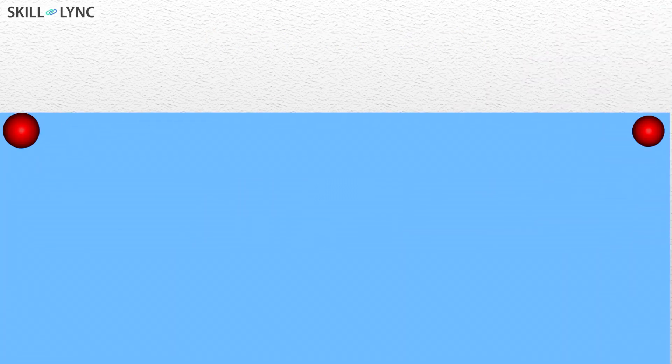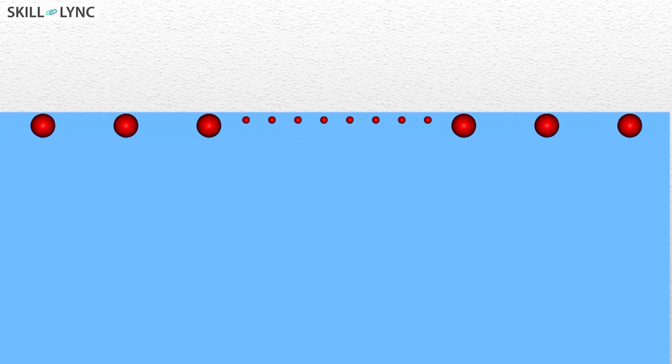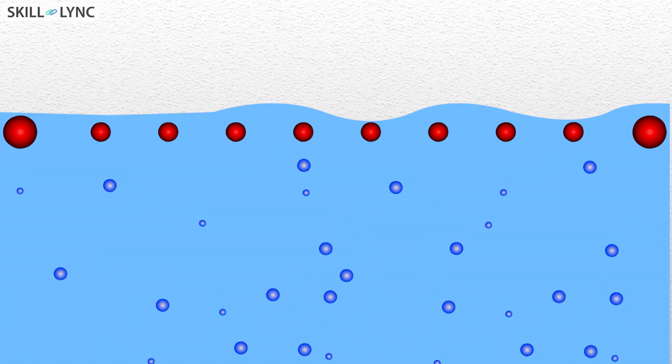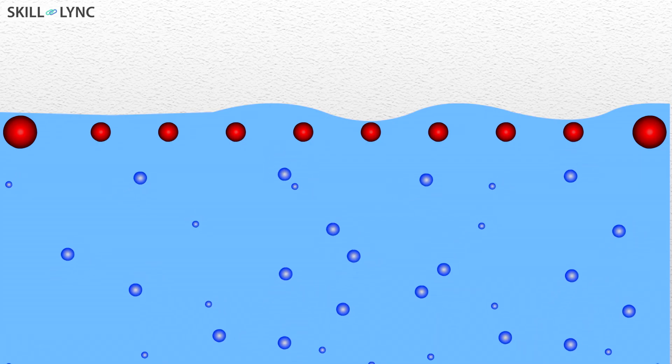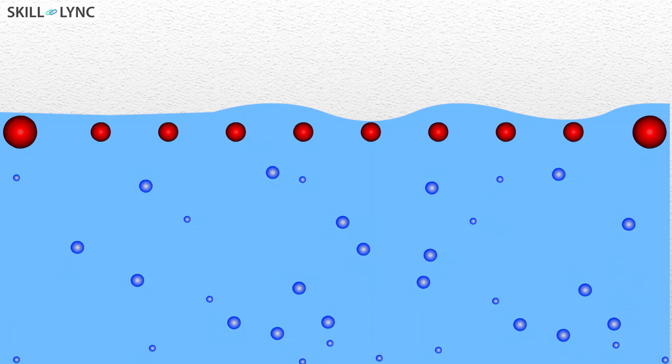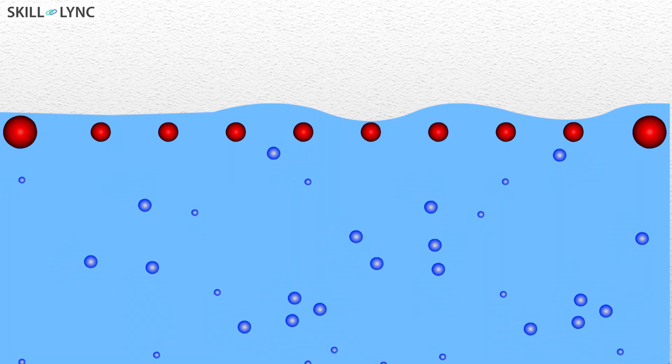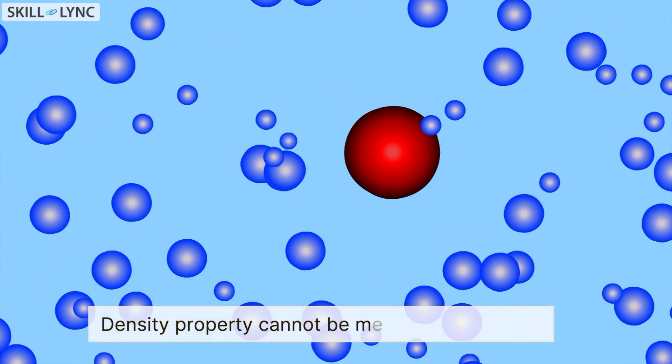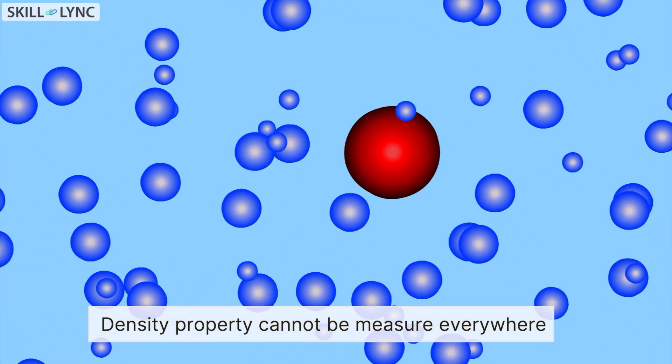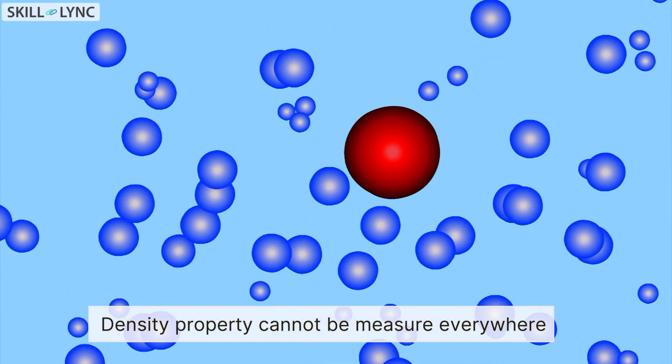If I zoom in between the first two points I can add more points between these two points so that I can calculate the density there as well. I should be able to do this recursively as long as I find more water between the first two points. As long as you are able to do this your system is continuous and you can say that you are in continuum.